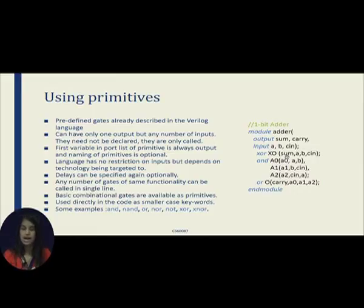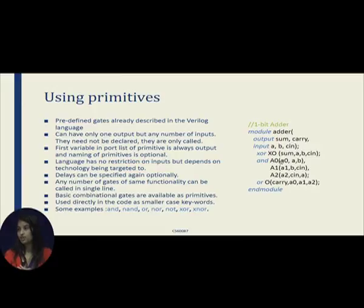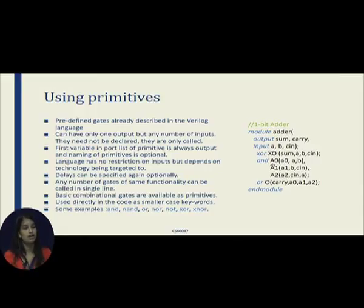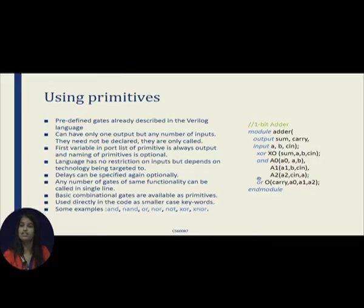There are no language restrictions, but generally the number of inputs and outputs depends on the technology we use. We can optionally specify delays of AND gates — for example, we can write AND #1 2 something — which defines the propagation delay or other delays in that particular gate. The combinational gates such as XOR, OR, and others are readily available in Verilog as primitives. Some examples of primitives are AND, OR, NOR, NOT, and all these gates.